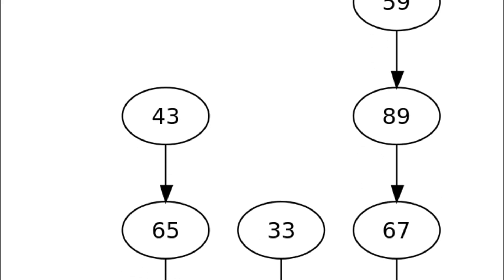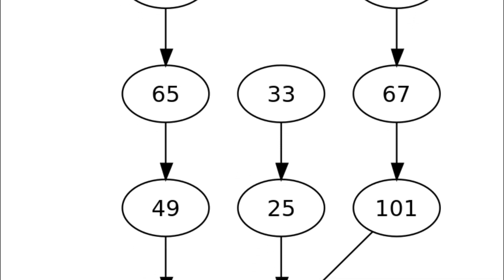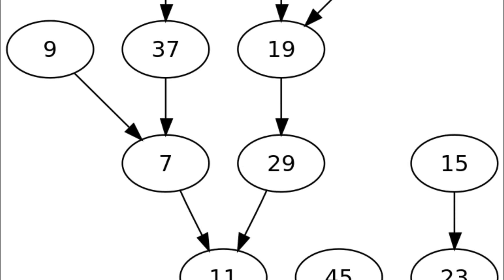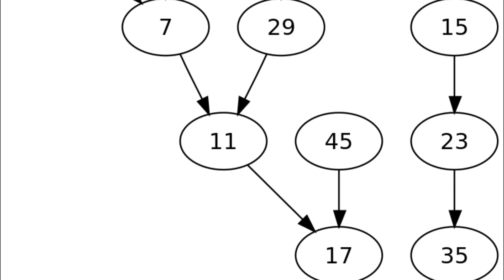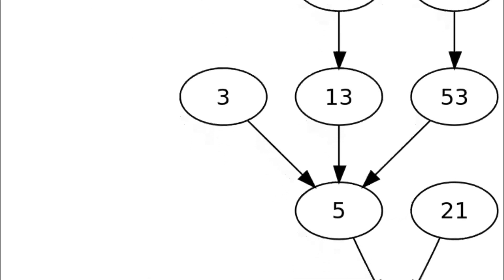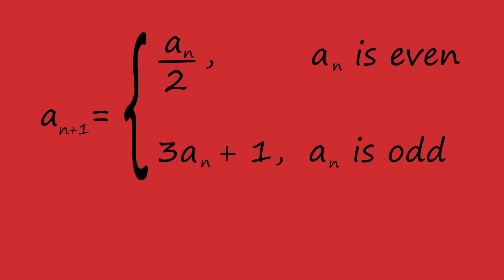I'm willing to wager that no matter what number you pick, the sequence of numbers it creates eventually reaches the number 1. In fact, humanity has never found a number that doesn't do this. But mathematicians have also never been able to prove that this sequence always eventually hits the number 1, no matter what number you start with.